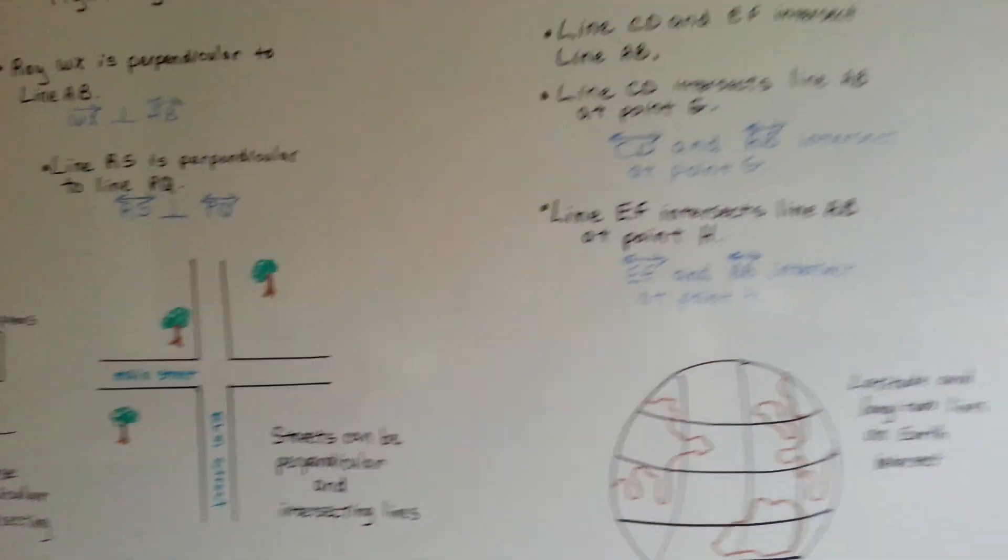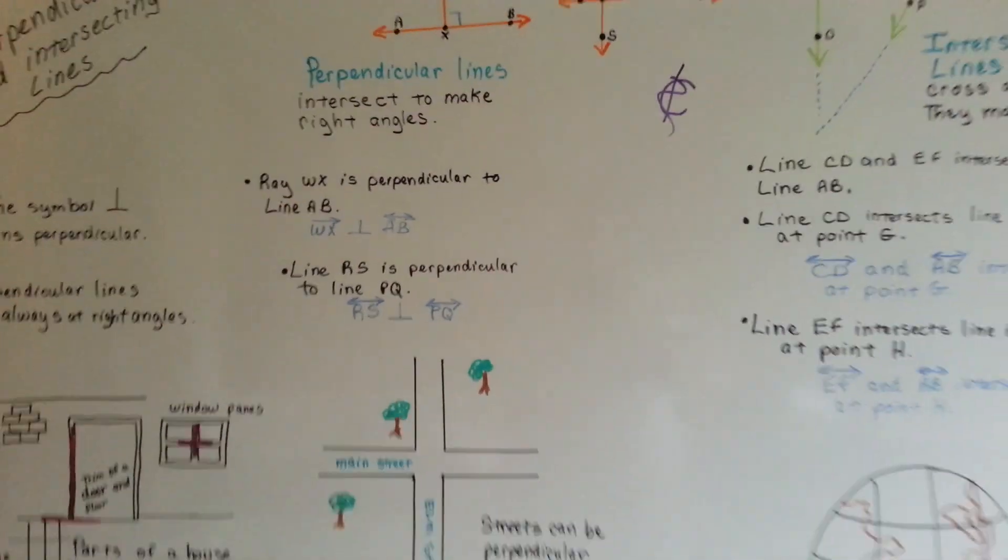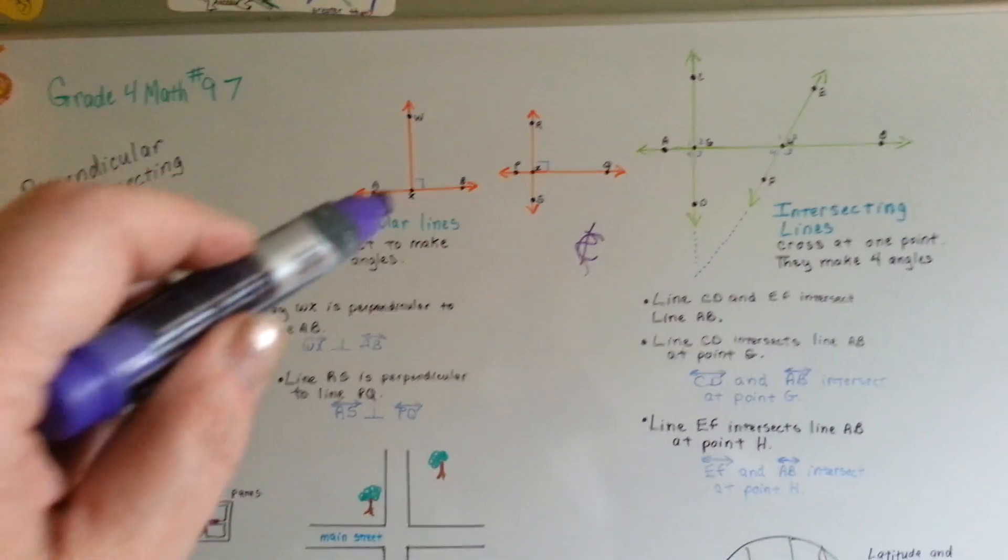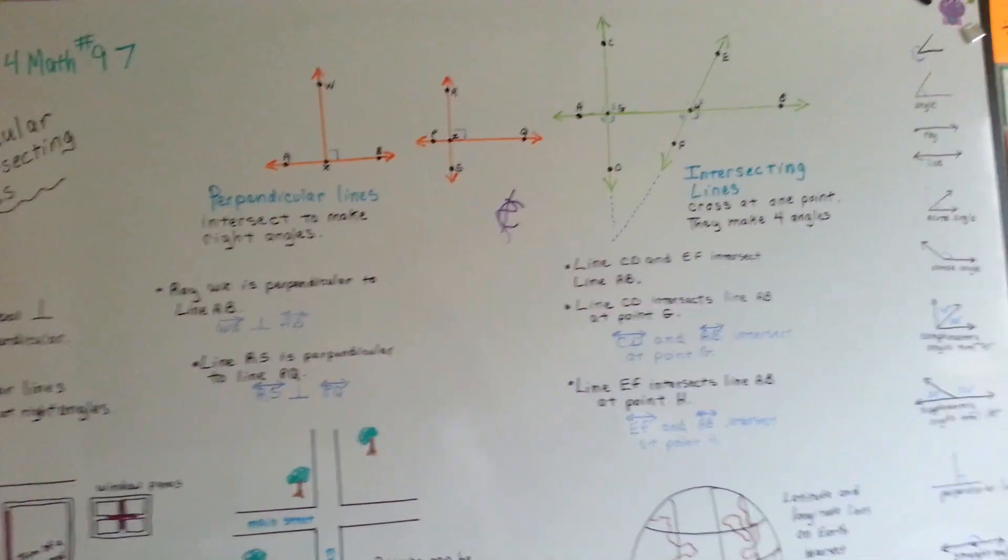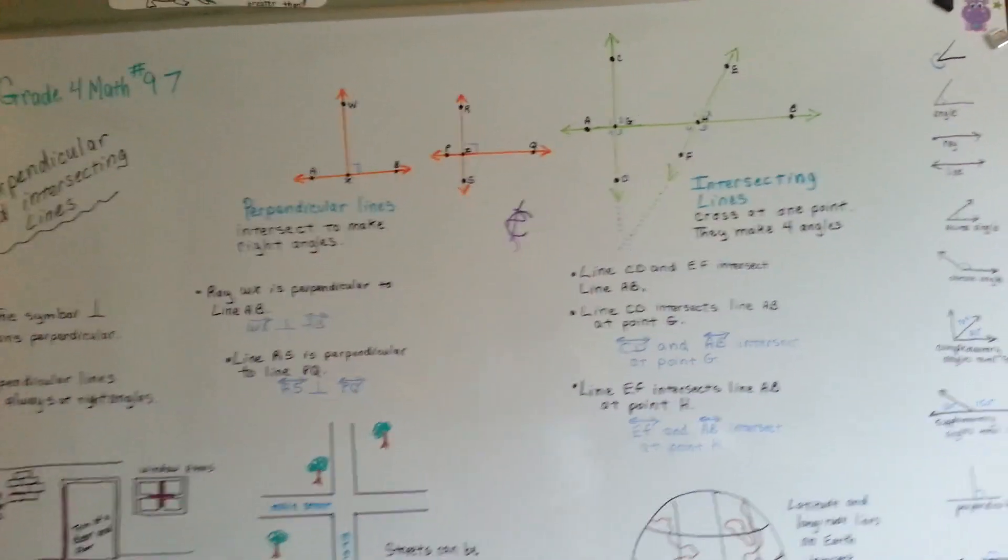So, perpendicular and intersecting lines are everywhere. You know they're perpendicular when it makes a right angle, like that. They intersect at one place and make four angles.